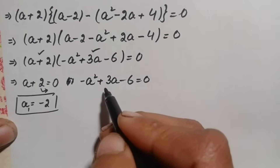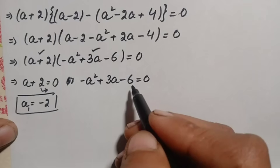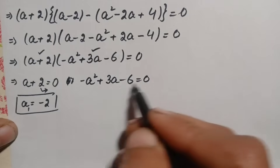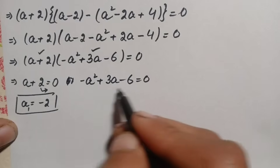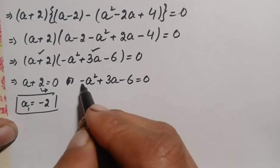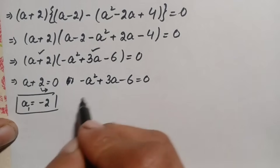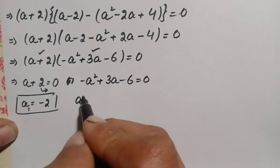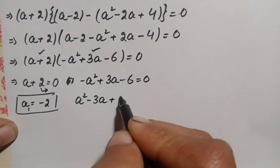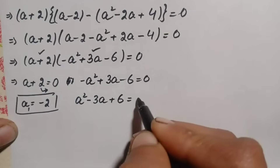Now we solve the quadratic equation for the other two values of a. First, we make the coefficient of a squared positive by multiplying both sides by negative 1. This changes the signs of each term, giving us a squared minus 3a plus 6 equals zero.